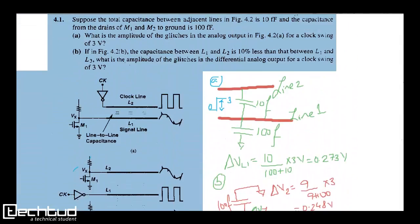So now you apply the same fundamentals here. Suppose delta 3 volts is the jump across this line L2. This is line L2, a 0 to 3 volt jump you are getting. So in line 1, the glitch we will observe is 10 by 100 plus 10 into 3. This is 10, that is C1 by C1 plus C2 into delta V, which equals 0.273 volts.